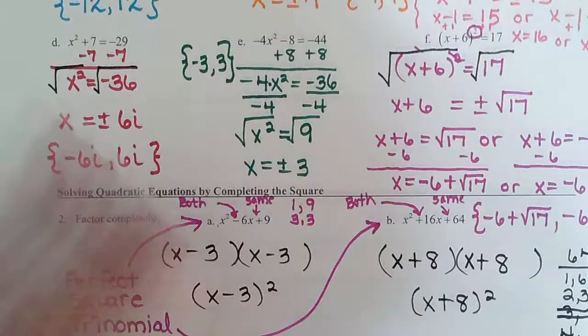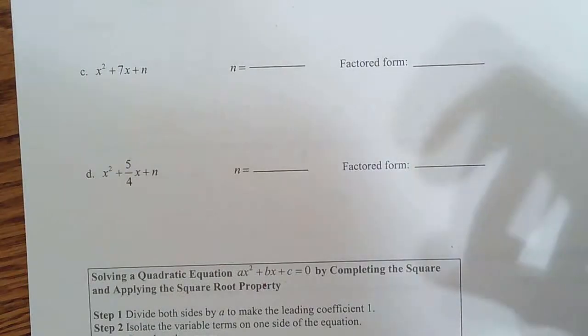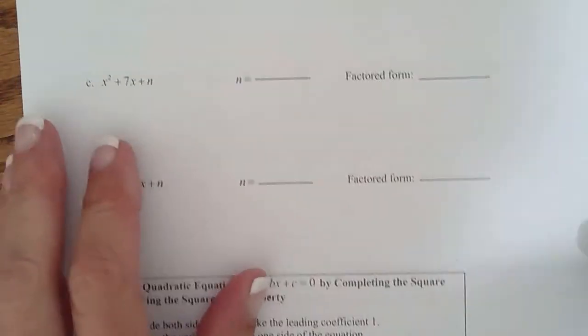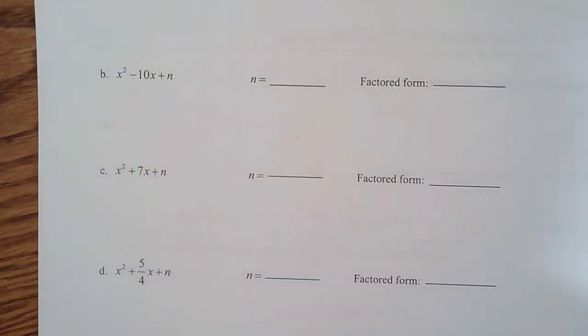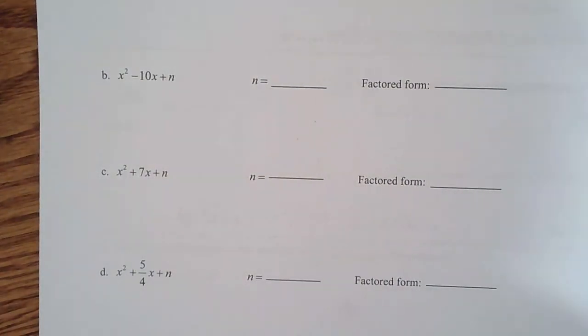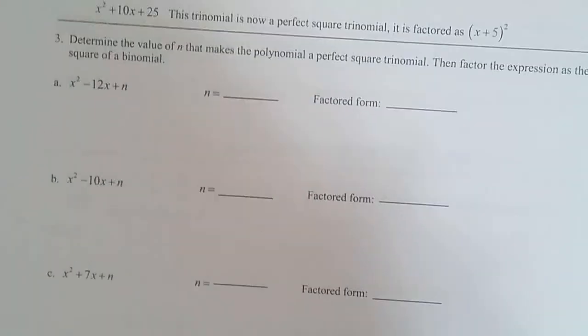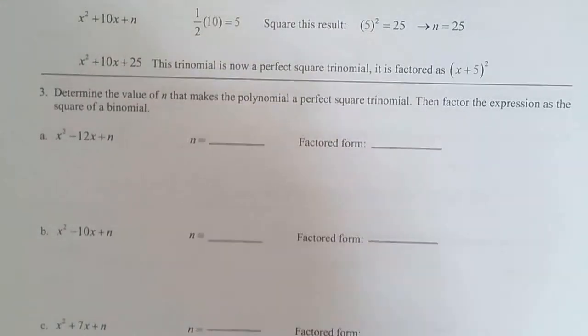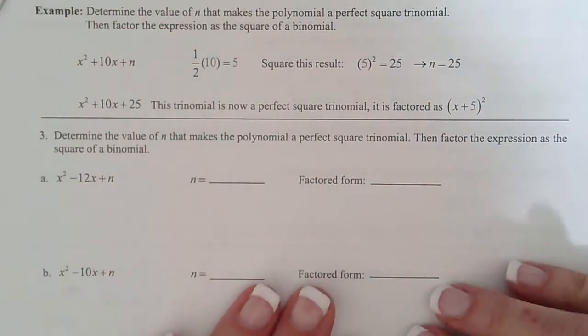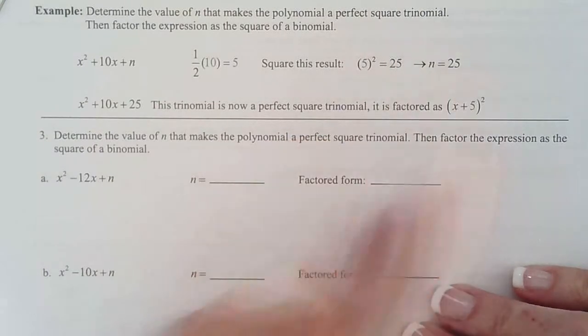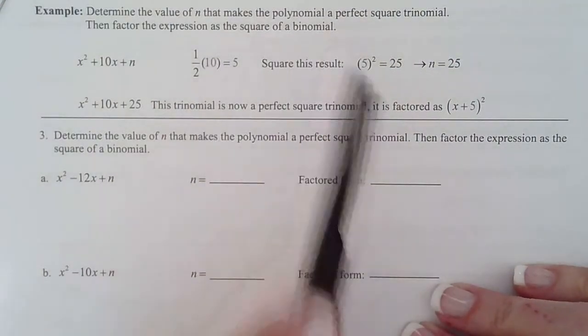Okay, let's go ahead and go to page 2. So now we're going to learn how to make perfect square trinomials. Determine the value of n that makes a polynomial a perfect square trinomial, then factor the expression.